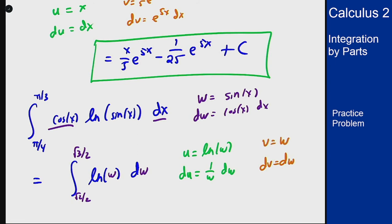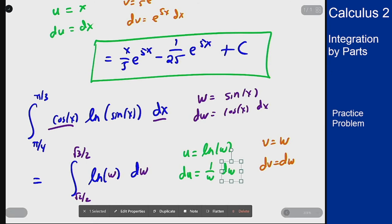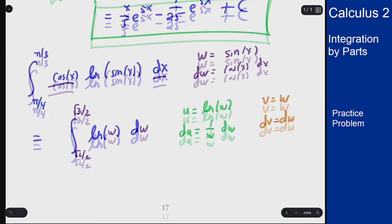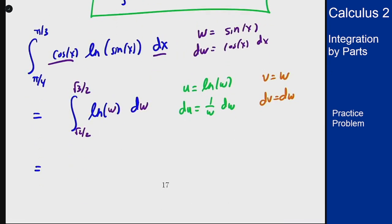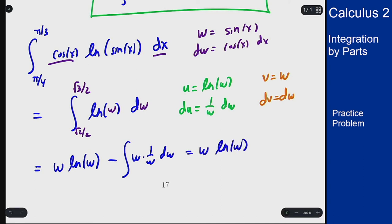I then get from this that the integral using integration by parts is u times v so w log of w minus integral of v times du but that's just w times 1 over w dw. That's going to be integral of 1. So we get w log of w minus w because that'll be integral of 1 which is w.